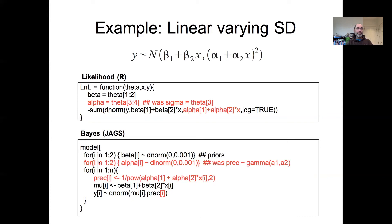The Bayesian version is very similar. One notable difference is that because we have these two alpha parameters, we now have to specify priors on them. I put fairly uninformative log-normal priors on those two alphas. This was because, similar to using a gamma prior on precision, the precision cannot be negative — we cannot let the linear model alpha_1 plus alpha_2 * X predict a negative standard deviation. By assuming log-normal priors or any prior enforcing that alpha_1 and alpha_2 cannot be negative, we ensure we won't predict negative variance values.